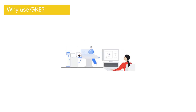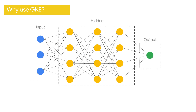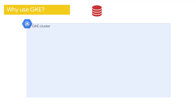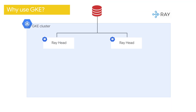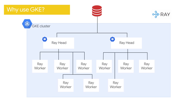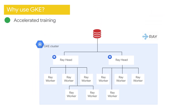Imagine a medical imaging company called QuickScan. They are training a deep learning model to detect early signs of cancer in X-ray images. They have a massive dataset and need to train their model fast. Using GKE and the Ray framework, QuickScan can distribute the training workload across multiple machines, significantly speeding up the process.